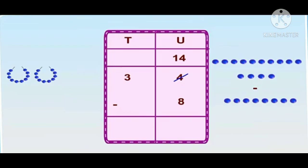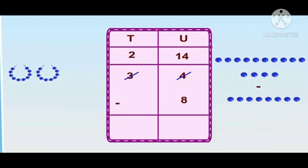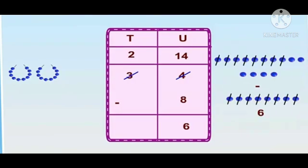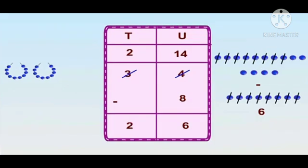It will turn out to be 14 units. Now we have 2 tens and 14 units. In the units place, 14 minus 8 equals 6, and 2 minus 0 equals 2. So 34 minus 8 equals 26.